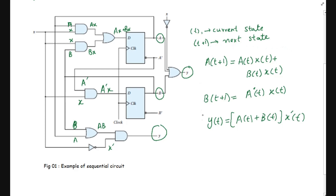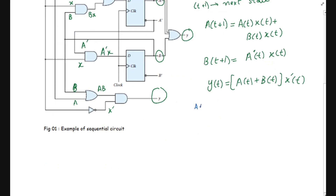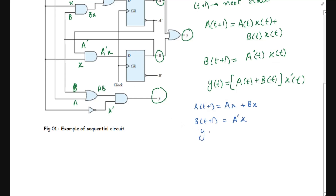Simplifying all three equations, on the right side we have the present state and present input portions. Writing them in simplified form: A(t+1) = A'·X + B·X, B(t+1) = A'·X, and Y = (A + B)·X'. Here we have just ignored the explicit T designation on the right-hand side. There must be clarity that T+1 refers to the future states or the next states.